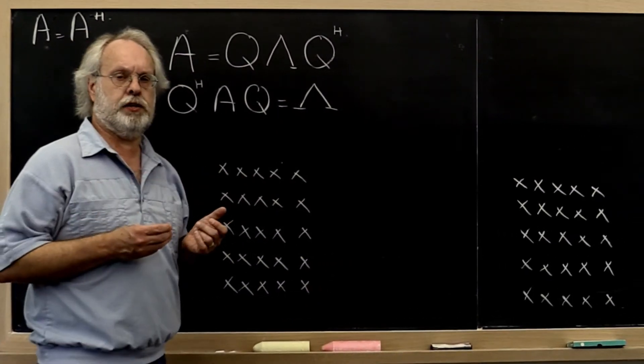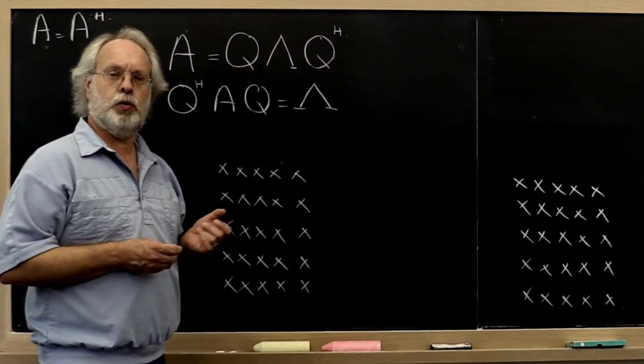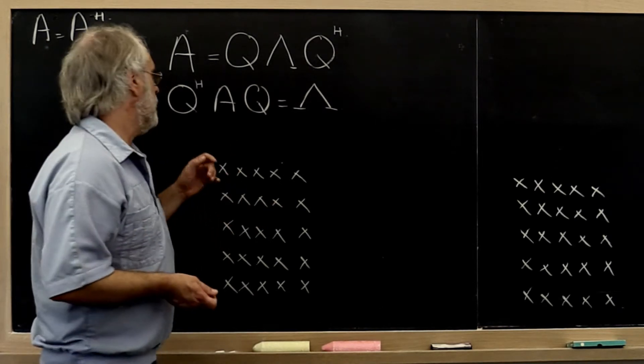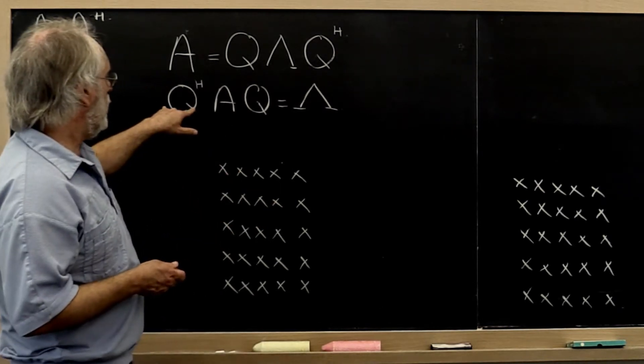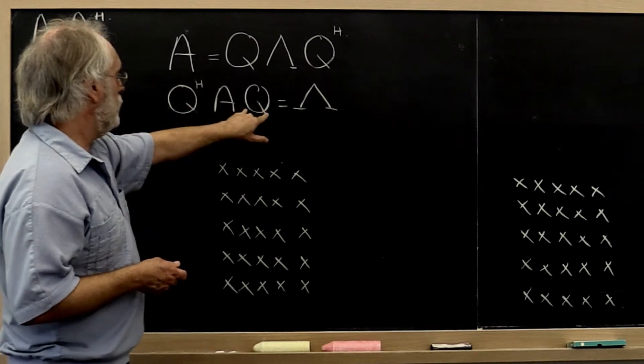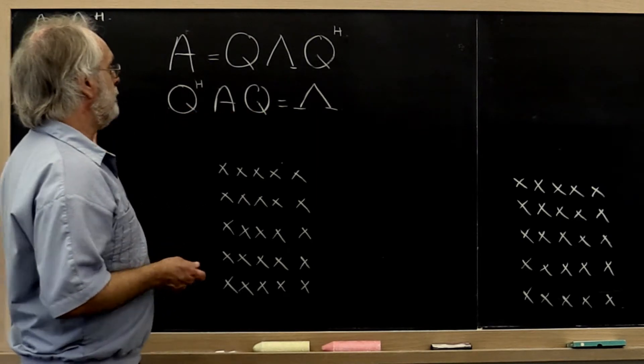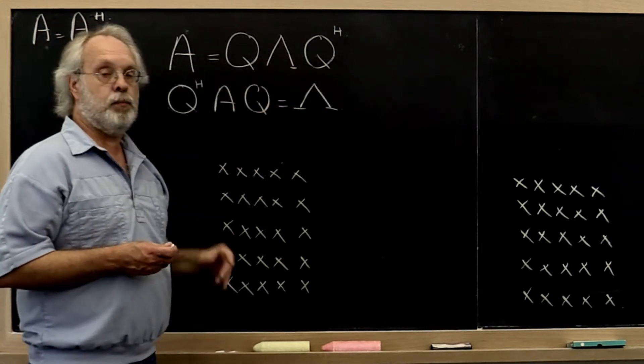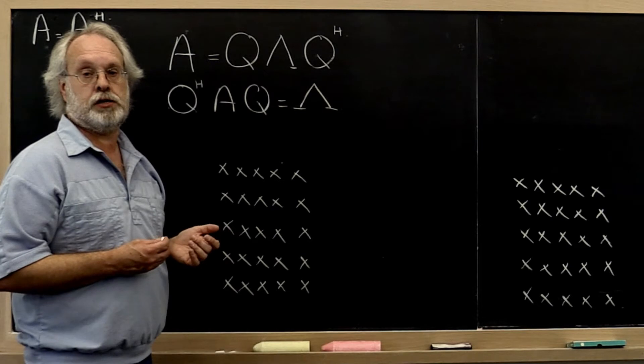Let's relate what we have here to the computation of the QR factorization via Householder transformations. What happened there was that we computed Q as a sequence of Householder transformations that were being applied to matrix A, and we ended up with an upper triangular matrix R.